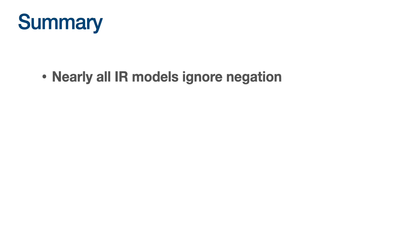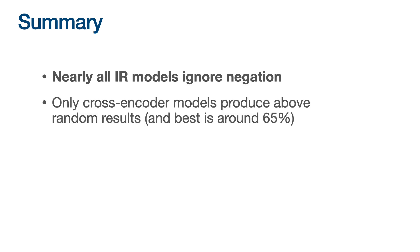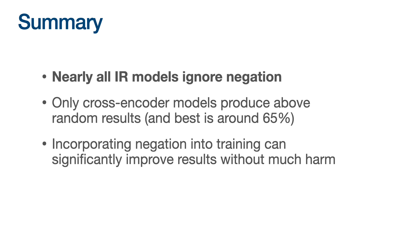In summary, nearly all retrieval models ignore negation. Only cross-encoder models produce above-random results, and the best one even after fine-tuning is only at 65% paired accuracy, so there is a long way to go. Incorporating negation into training can significantly improve results without much harm: since most retrieval training just uses MSMARCO, which contains basically no negation, even incorporating a little of it will really help these models. Thanks for listening — please check out the paper or feel free to email me.